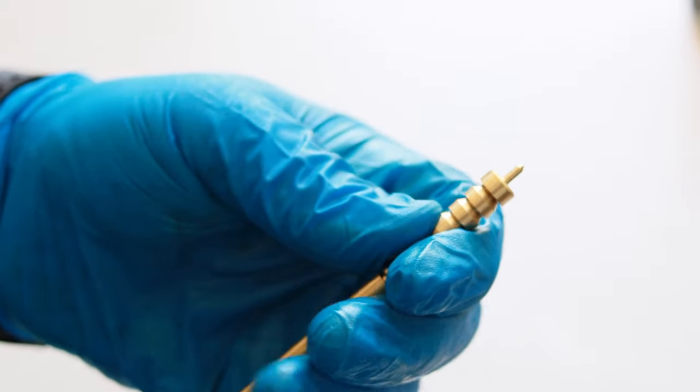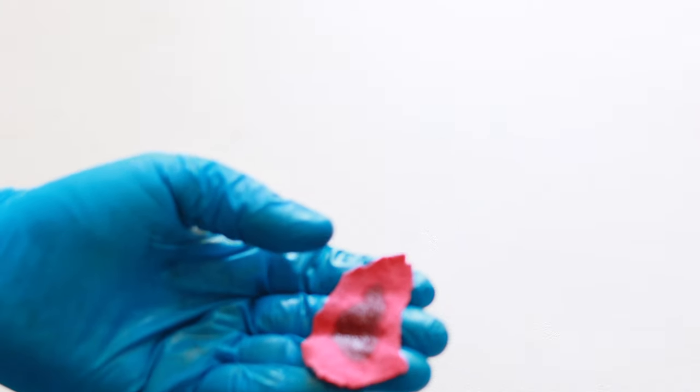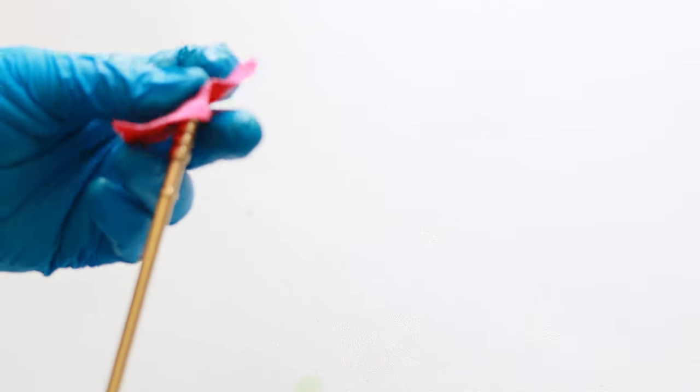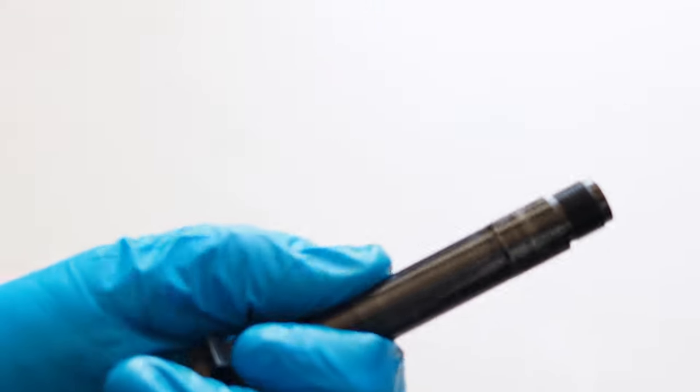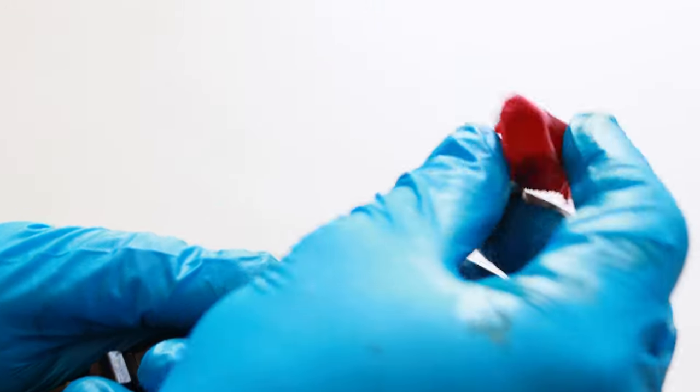Once again, make sure it's the correct caliber. Add CLP to a cleaning patch, put it over the jag, and push it through. Much like the brush, you're going to only go in one direction, from chamber end to muzzle end. You'll see that the first few patches come out really dirty. Just keep pushing patches through until they come out clean.